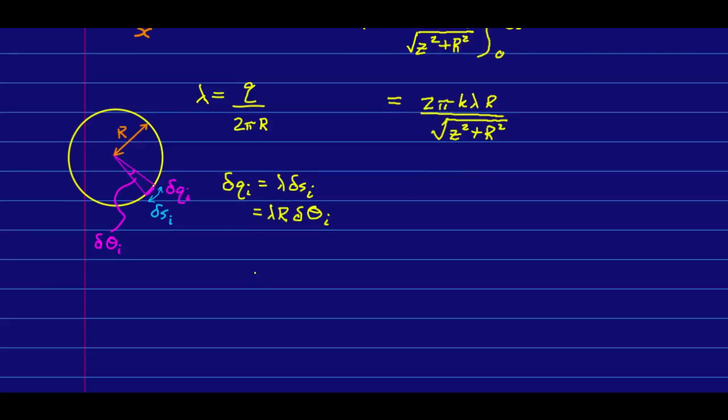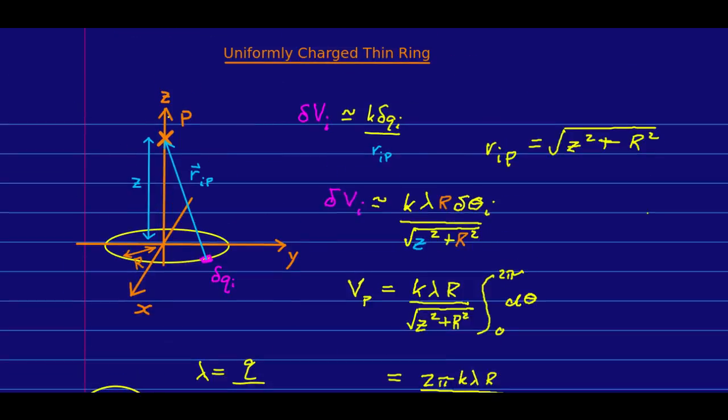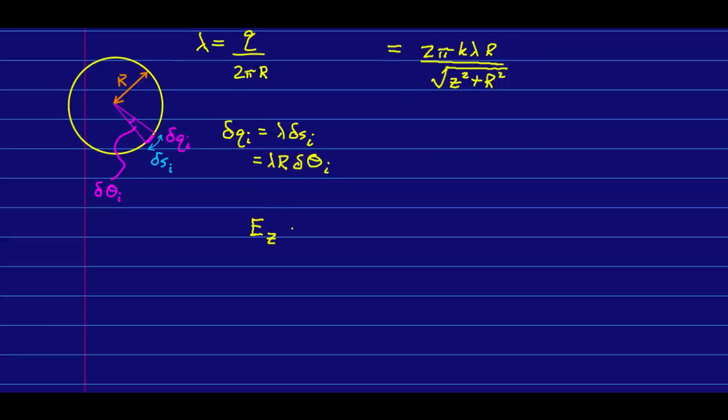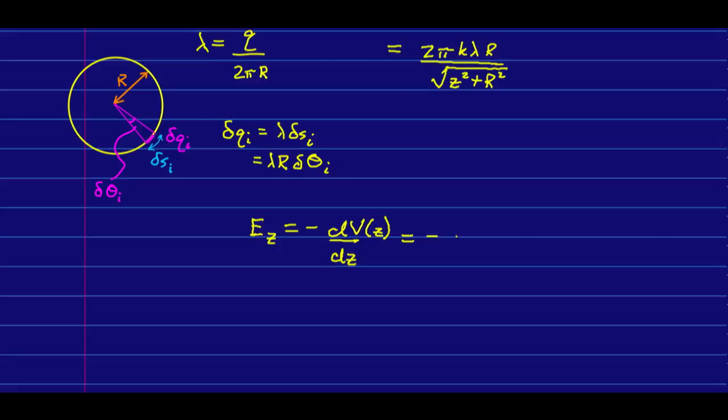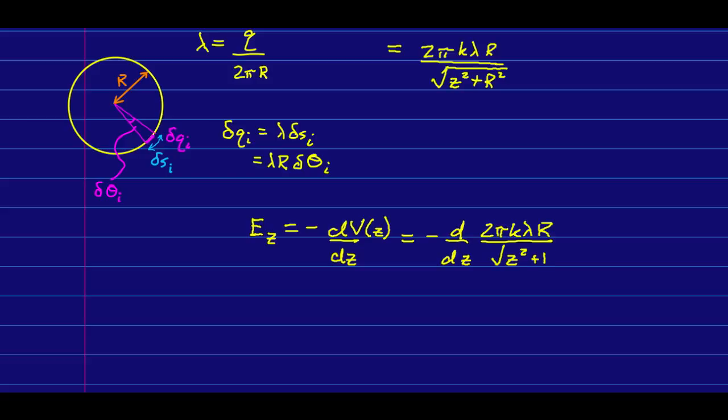We can say that the Z component of the E field at a point on the Z axis is going to be the negative of the Z derivative of the potential as a function of Z.